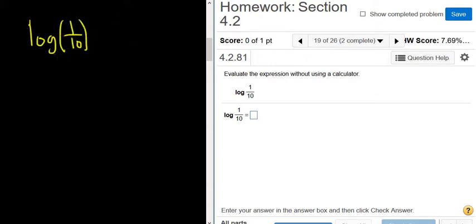So the question is 10, because the base here is 10 and it's hidden, 10 to what power is going to give you 1 over 10? Well, the only way to get from a 10 to a 1 over 10 is to have a negative exponent, so negative 1.